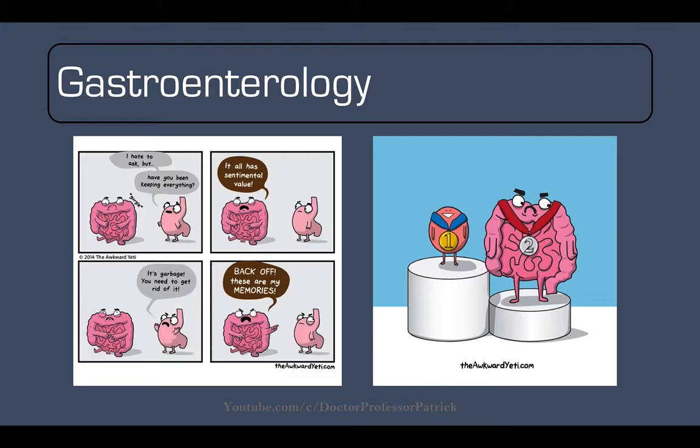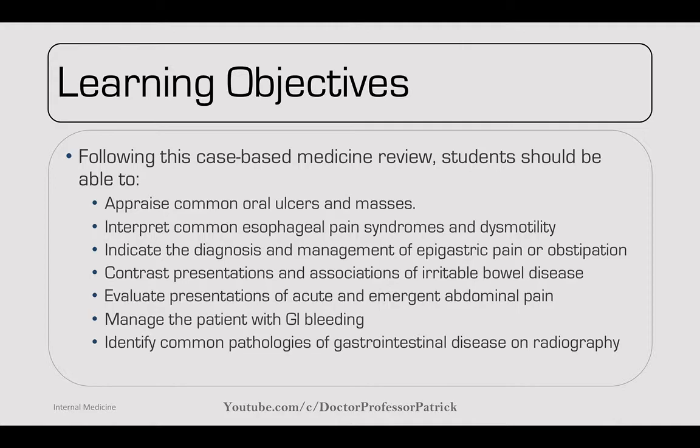We're going to move on to the GI section. The learning objectives are to appraise common oral ulcers and masses, to interpret common esophageal problems, symptoms, and dysmotilities, indicate the diagnoses and management of epigastric pain or obstruction, contrast presentations and associations of irritable bowel disease, evaluate presentations of acute emergent abdominal pain, manage the patient with GI bleeding, and identify common pathologies of gastrointestinal disease on radiography.